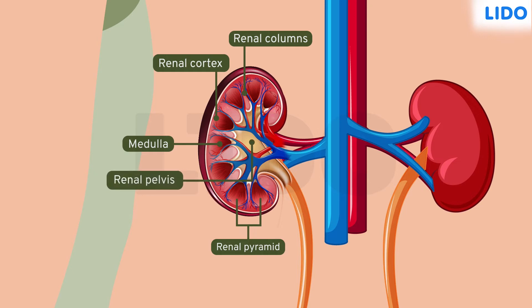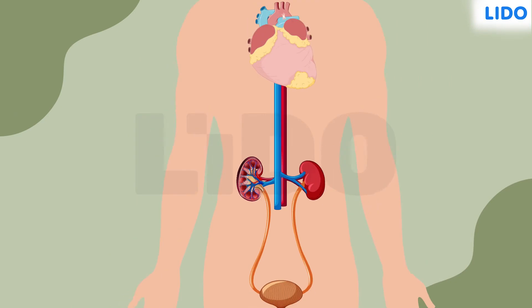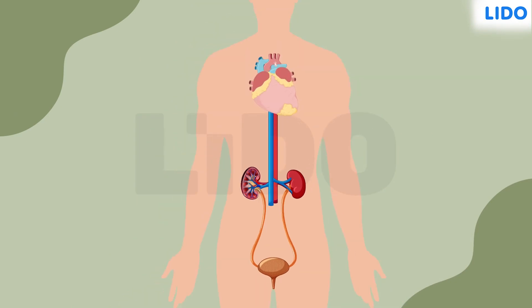Lastly, the renal pelvis or the hilum is the innermost concave region which allows the entry and exit of blood vessels.